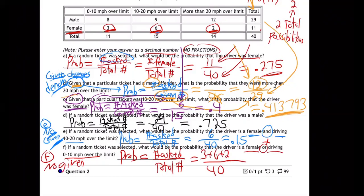It can be any female — you're going to grab somebody random, what's the chance it's a female? There are all the females — 11 females. I could have just grabbed this 11. Or it doesn't have to be a female — it could be anybody driving zero to 10 over the limit.